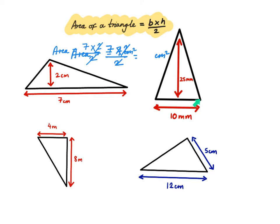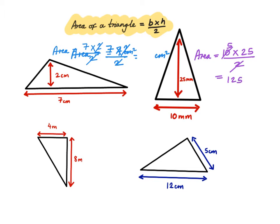Now let's do this one here. The base of this triangle is 10 millimetres and the height of this triangle is 25 millimetres. So the area of this triangle will be equal to the base, which is 10, multiplied by the height, 25, divided by 2. 10 divided by 2 is just 5. 5 times 25 is 125 millimetres squared.